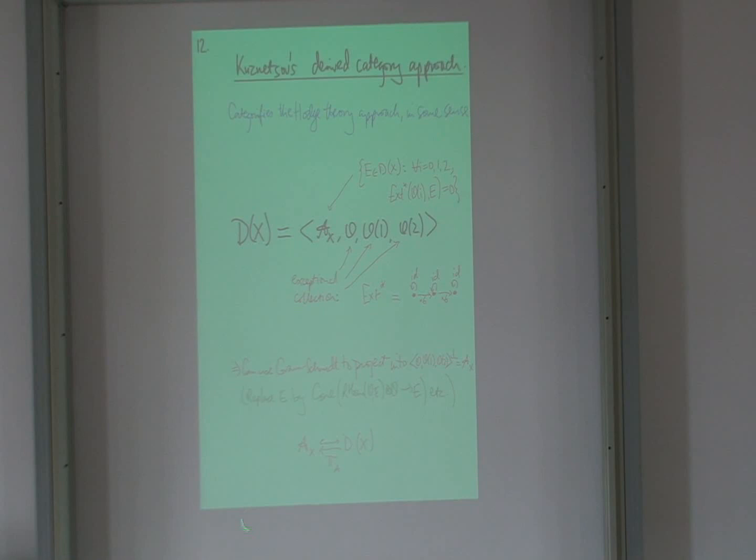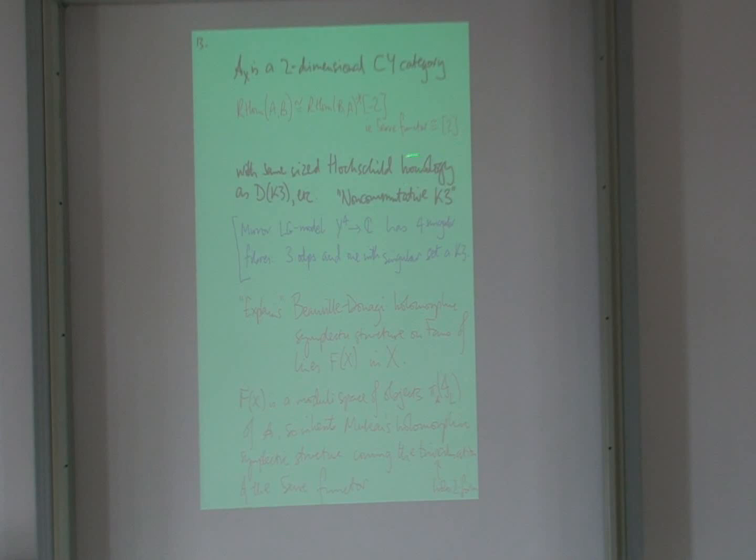So I have this category, which is embedded in DX, and I can project out. So this, this AX has a category, AX. And it looks like a K3, so it's a two-dimensional CY category. Its Hochschild cohomology looks like that of a K3.